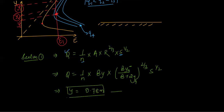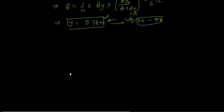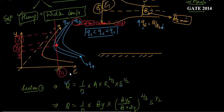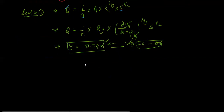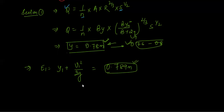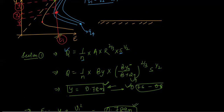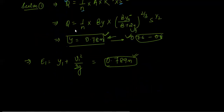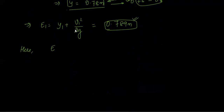The calculated normal depth of 0.78 m falls within the given range of 0.76 to 0.8, so this is valid. Now we calculate the specific energy at section 1: E1 = y1 + V1²/(2g). With y1 = 0.78 m and velocity V1 = Q/(B×y1), we compute E1. Since losses are negligible, the energy at section 2 equals energy at section 1: E2 = E1.